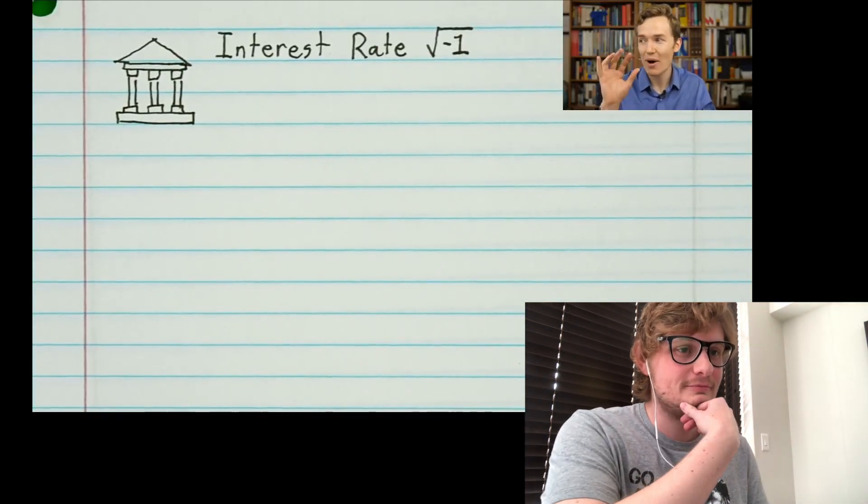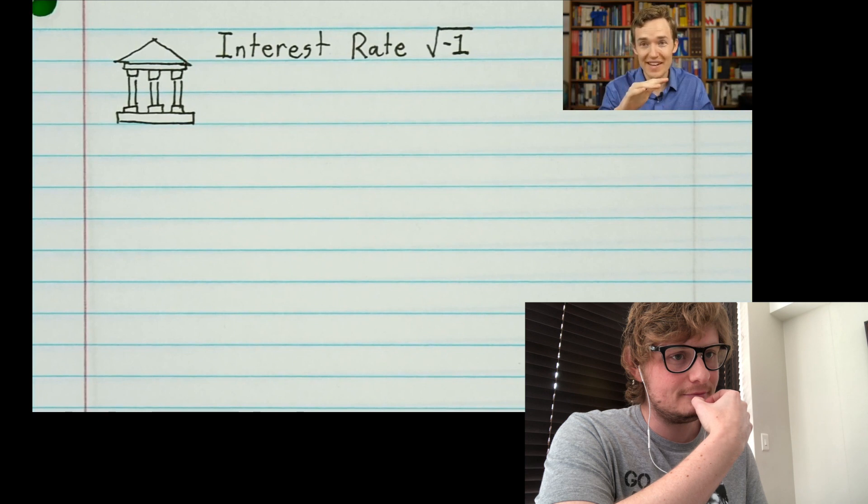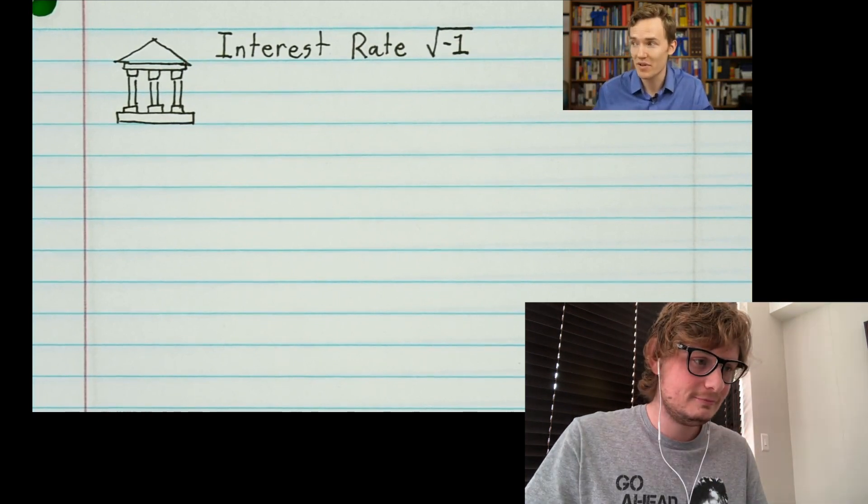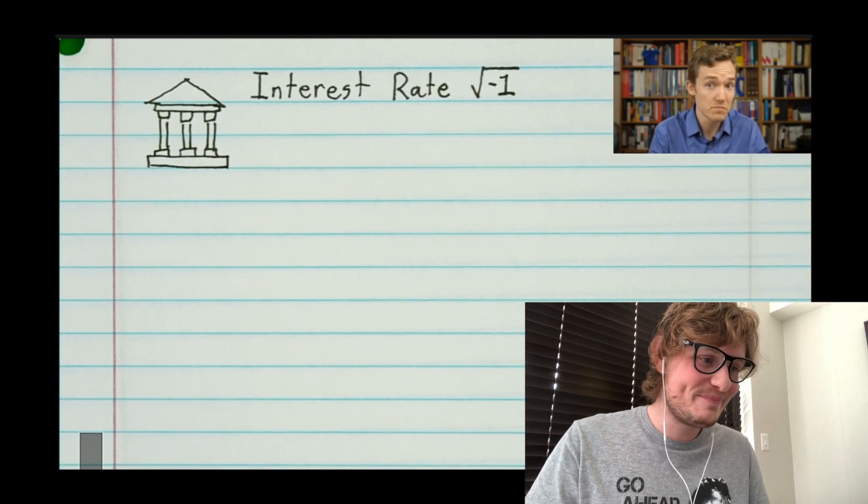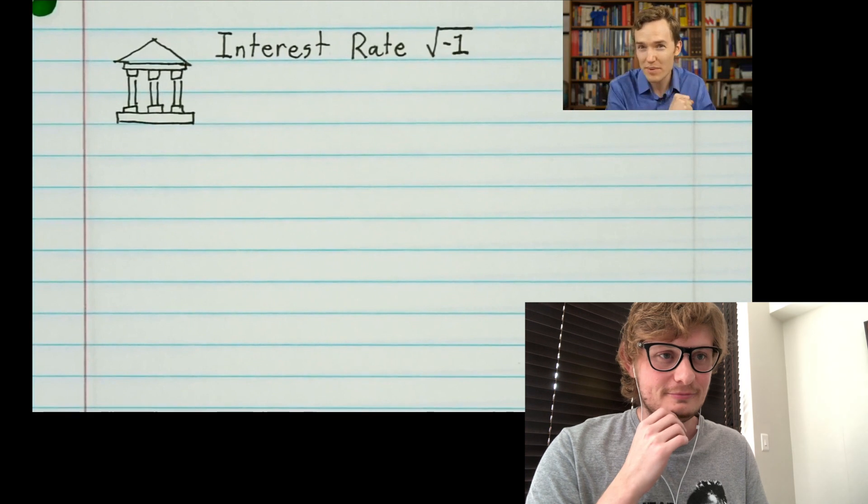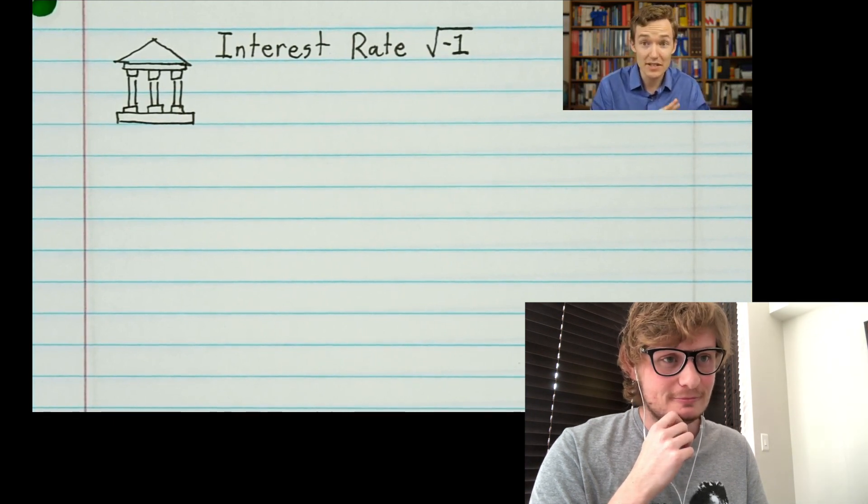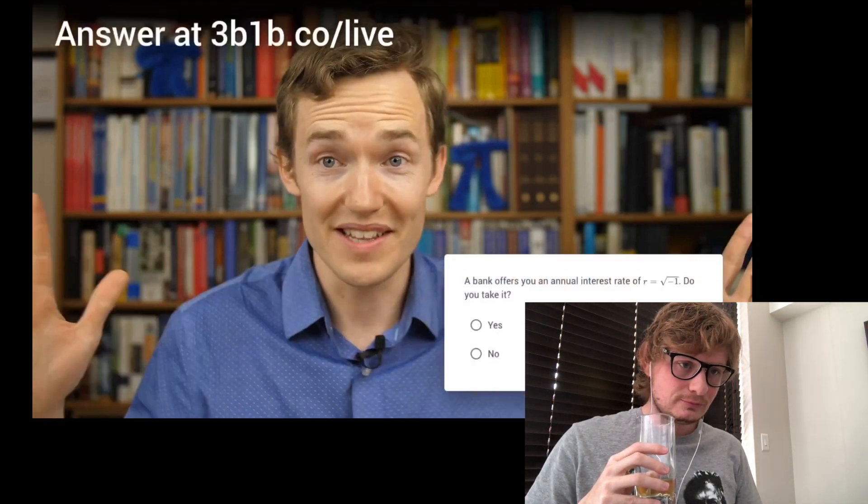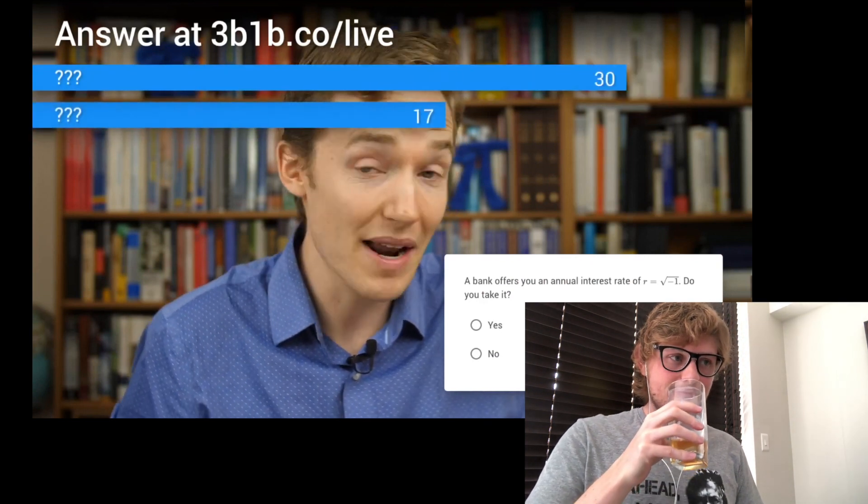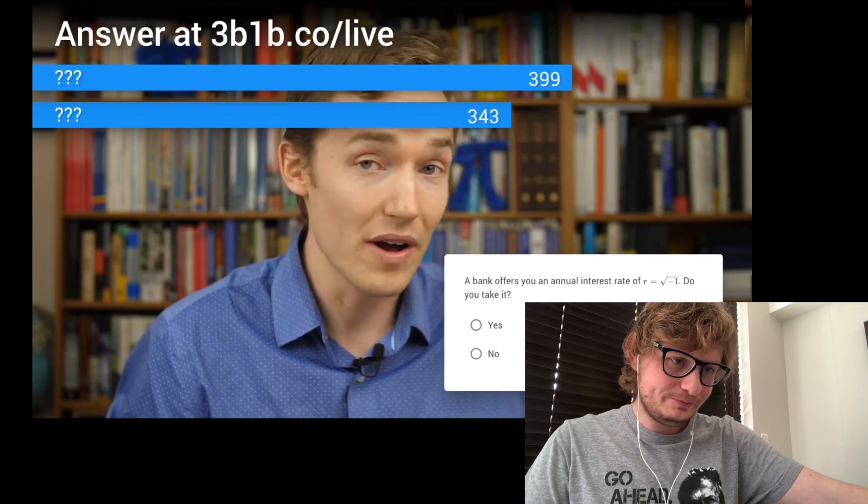Continuing the video: Now I almost guarantee however interesting you think this question is, it's going to be more interesting than that. I think there's going to be some people who find it totally nonsensical. What on earth would it mean for your money to grow by the square root of negative one? And I think there's also some people who think they know where this lesson is going. To start things off, let me bring back our poll. I just want to get a sense for what your instinct is on this apparently nonsensical question. If a bank offers you an annual interest rate of the square root of negative one, do you take it?